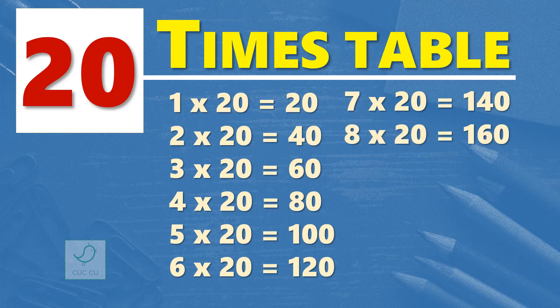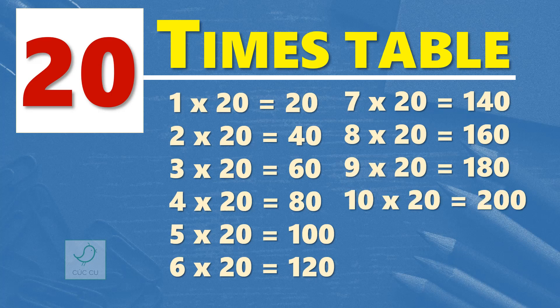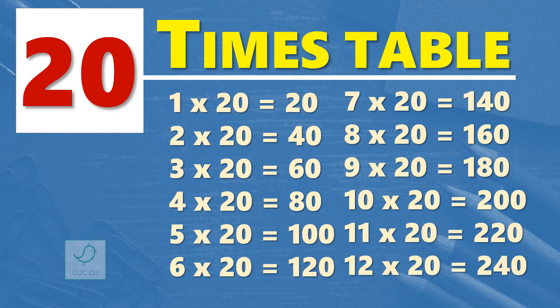9 times 20 are 180. 10 times 20 are 200. 11 times 20 are 220. 12 times 20 are 240. One more time.